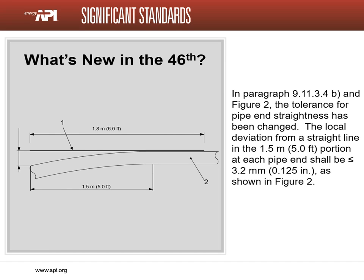What's new in the 46th edition? Pipe end straightness is not a new concept. However, paragraph 9.11.3.4 and figure 2 define changes to how the measurement is taken, as well as the tolerance. The old tolerance was 0.156 inch over the last 4 feet. The new tolerance is 0.125 inch over the last 5 feet.